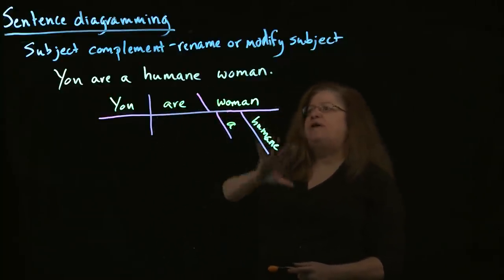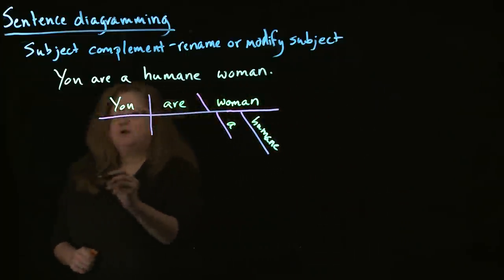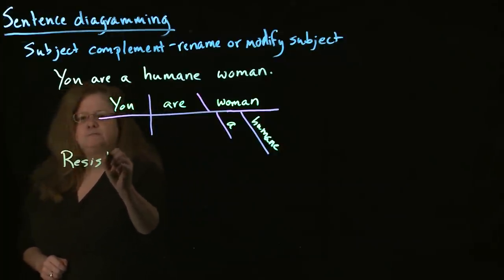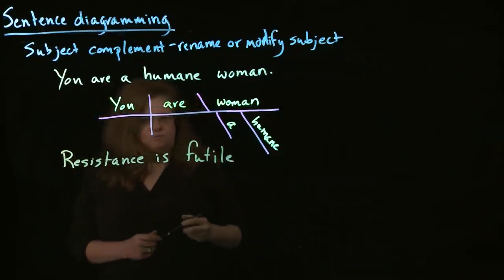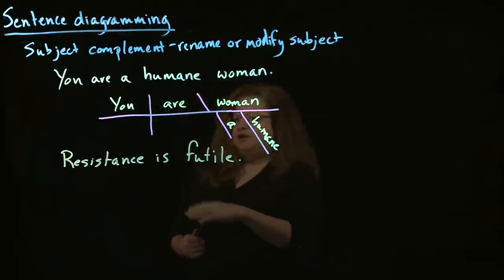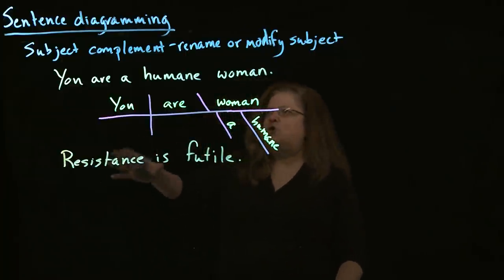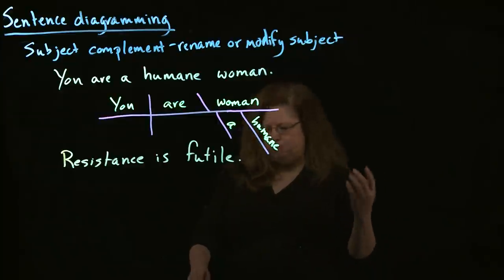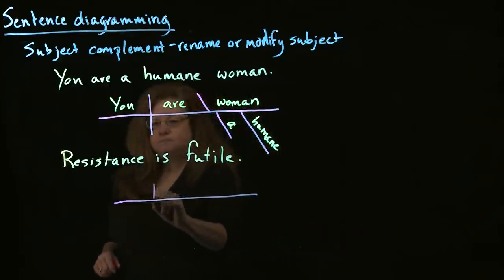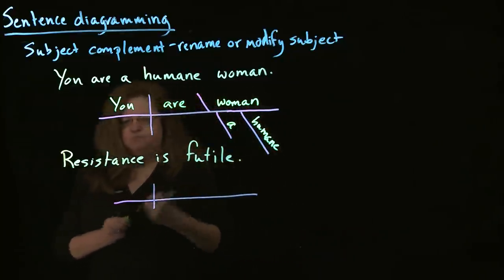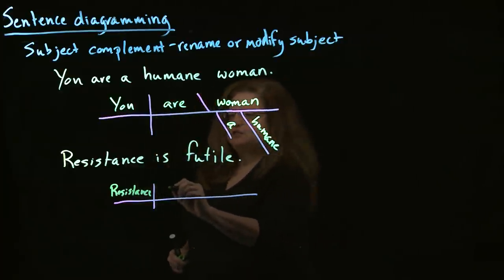We may also have a subject complement that modifies the subject. For example, 'resistance is futile.' What we have here is a description of the resistance, so this is also going to be a subject complement referring back to the subject. This one is fairly simple to draw. We have our subject, 'resistance,' and our verb — in this case, it's just 'is.'